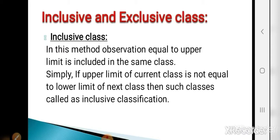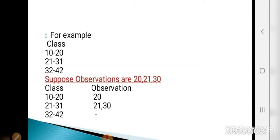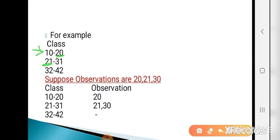See the example. Classes are 10 to 20, 21 to 31, 32 to 42. Consider the first class 10 to 20. The upper limit is 20, and the lower limit of the next class is 21. Since the upper limit of the current class is not equal to the lower limit of the next class, such classes are called inclusive classes.